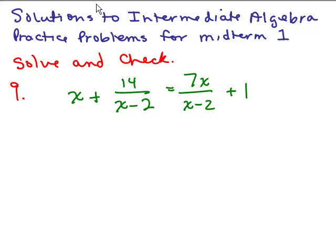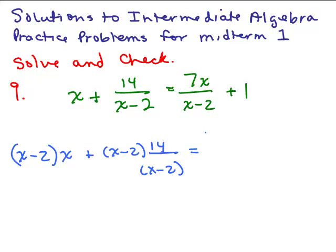I'm going to multiply each side by x minus 2. I have (x-2) times x plus (x-2) times 14 over (x-2) on the left side, and 7x over (x-2) times (x-2) plus 1 times (x-2) on the right side. Where can we cancel? Right here and right here.